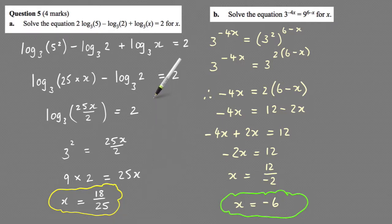Part b: Solve the equation 3 to the minus 4x equals 9 to the 6 minus x for x. So what you really need to do is make this 9 equal to 3 to some power, and it's 3 squared.